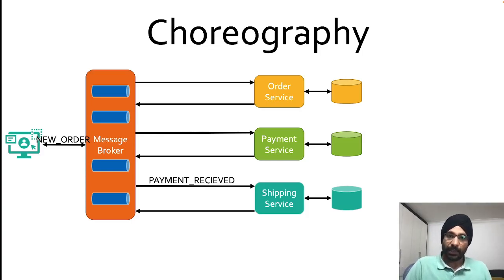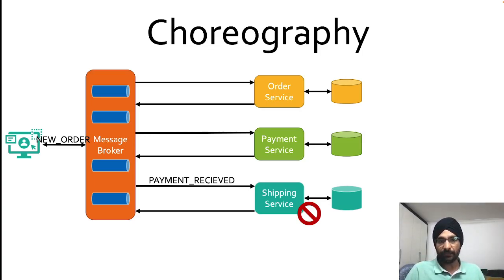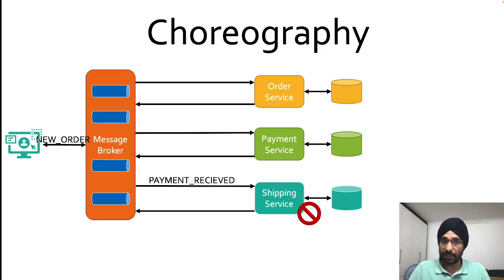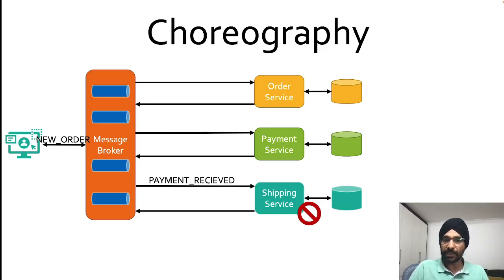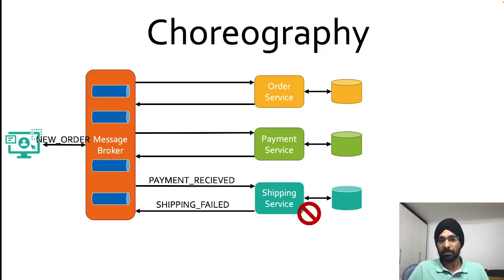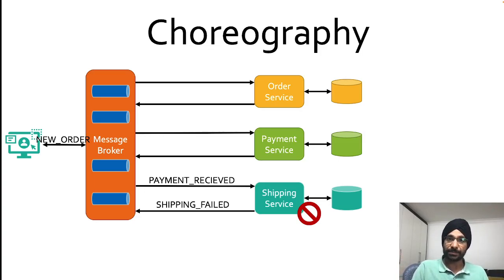Now let's say hypothetically there is a problem with the shipping service. When it consumes 'payment received', it cannot fulfill the order — maybe the stock is not available, or there's a problem with the vehicle carrying the product. In this case, the shipping service will initiate a 'shipping failed' event, indicating it received the payment but could not ship. Other services can subscribe to topics where this type of failure event is published.